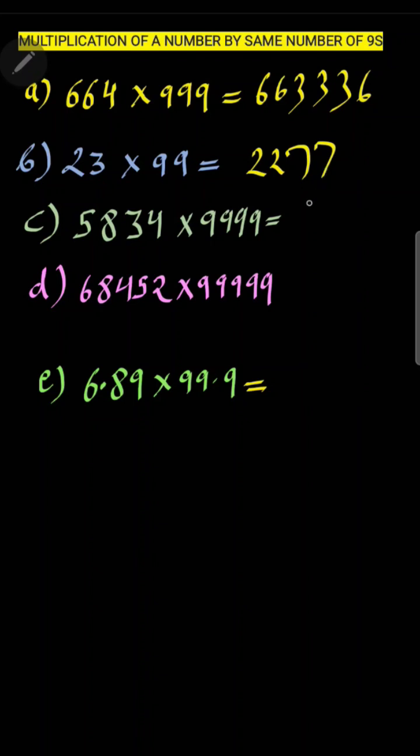And for C it is 58334166, and for the fourth one the answer is 68451315448, right?